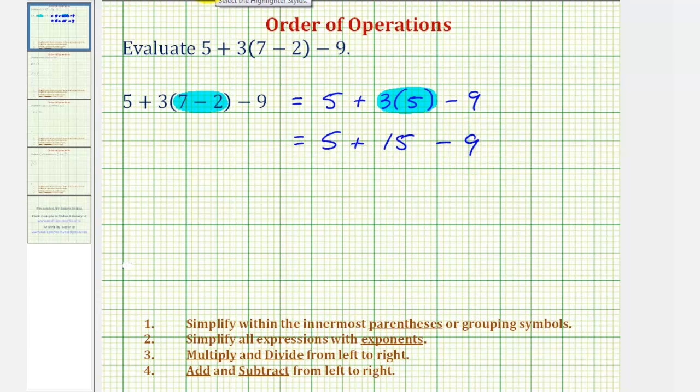Now for the last step in the order of operations, we add and subtract from left to right. Working from left to right, 5 plus 15 is equal to 20. So now this simplifies to 20 minus 9. Finally, 20 minus 9 is equal to 11. So the given expression is equal to 11.